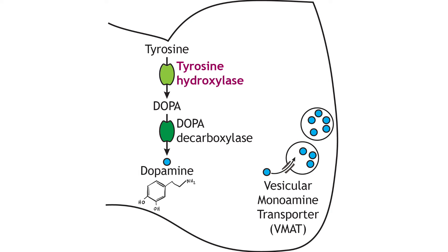Dopamine, a catecholamine transmitter, plays many roles in the nervous system, but it is best known for its roles in reward and movement. In the presynaptic terminal, the amino acid tyrosine is converted into DOPA via tyrosine hydroxylase, which is the rate-limiting step in the synthesis of all the catecholamines. DOPA is then converted to dopamine by DOPA decarboxylase. Dopamine is packaged into synaptic vesicles by the vesicular monoamine transporter.